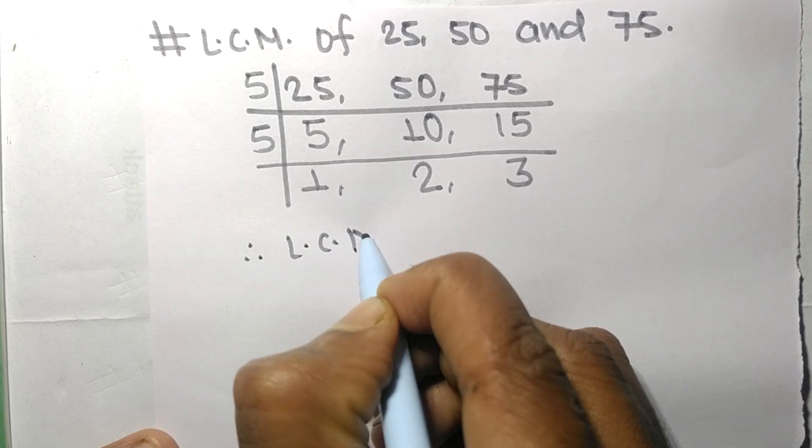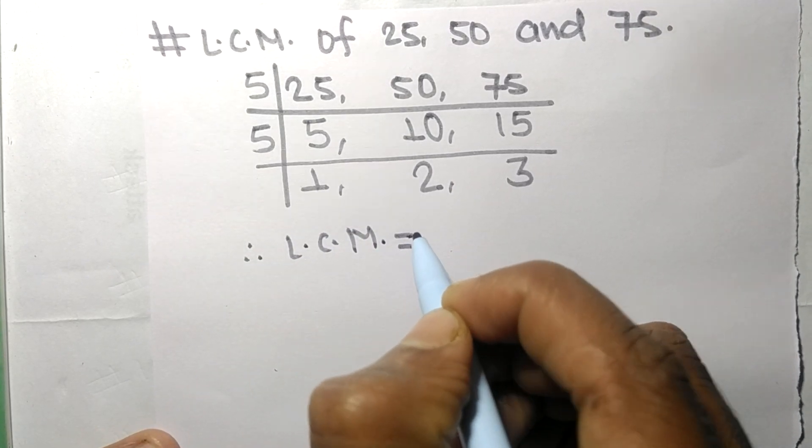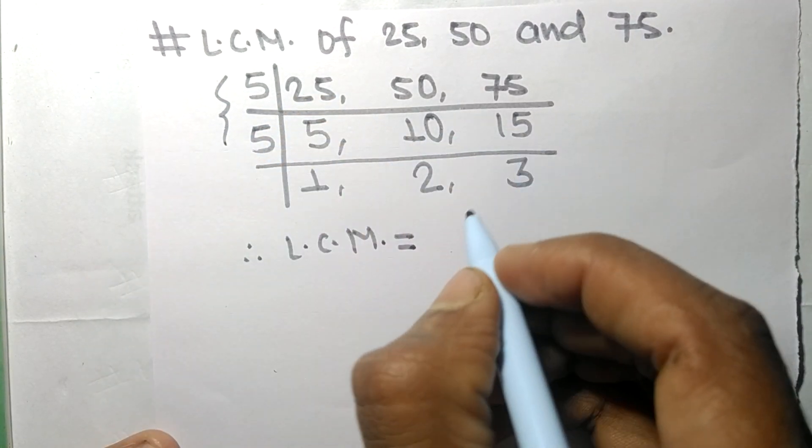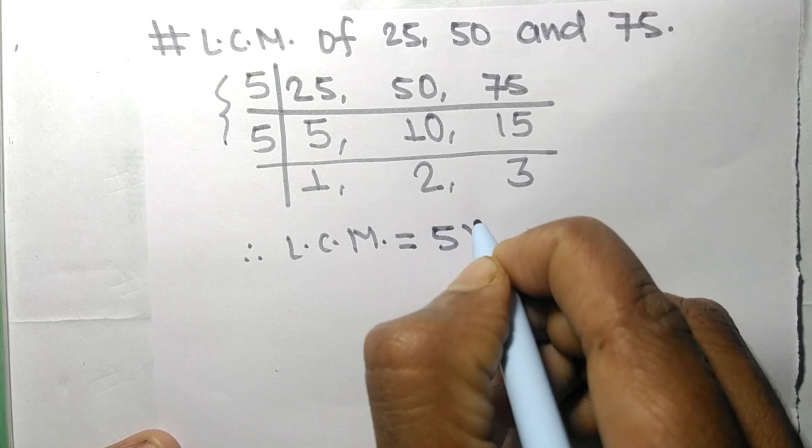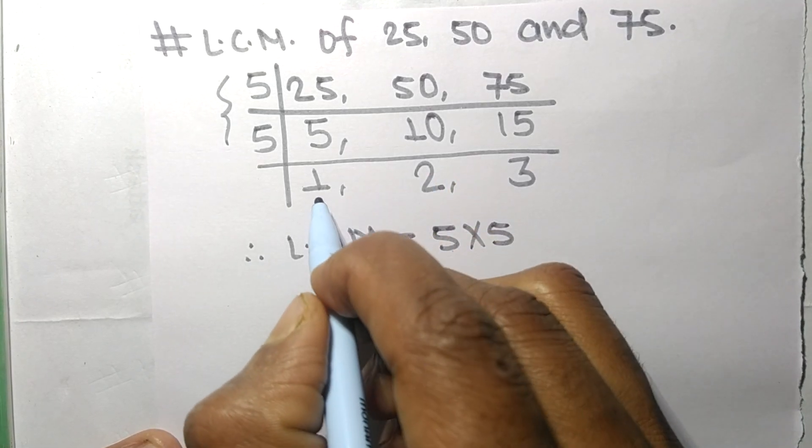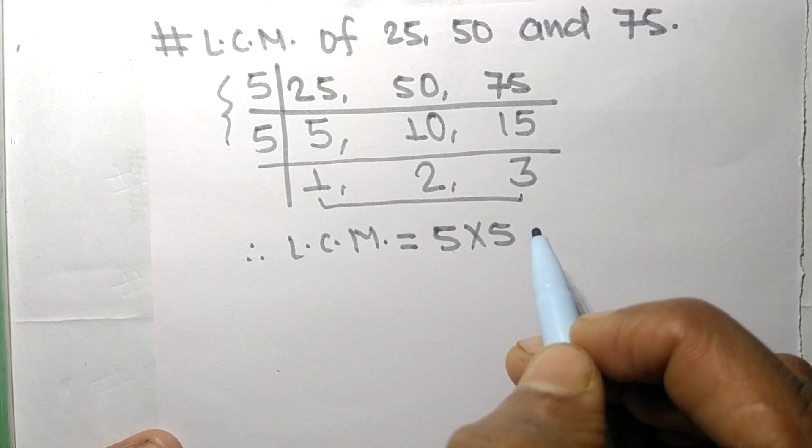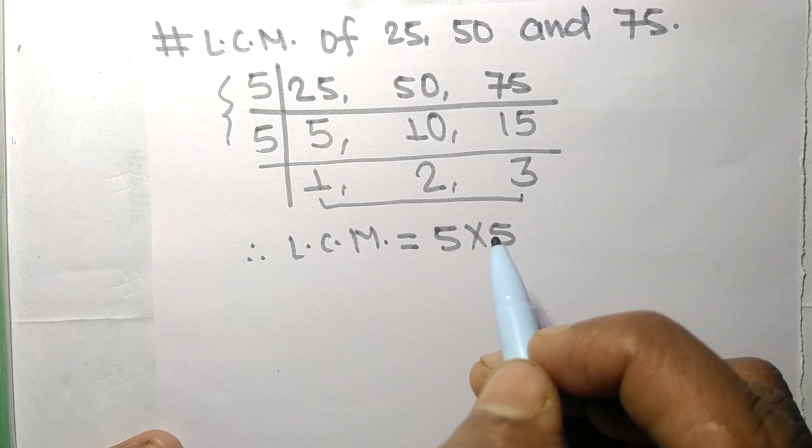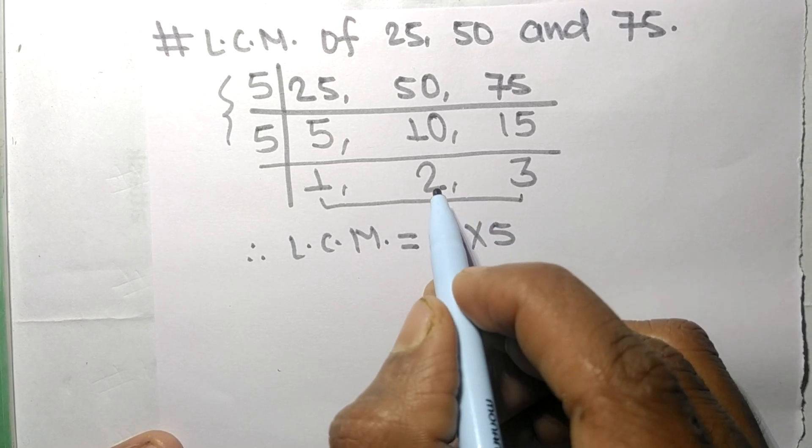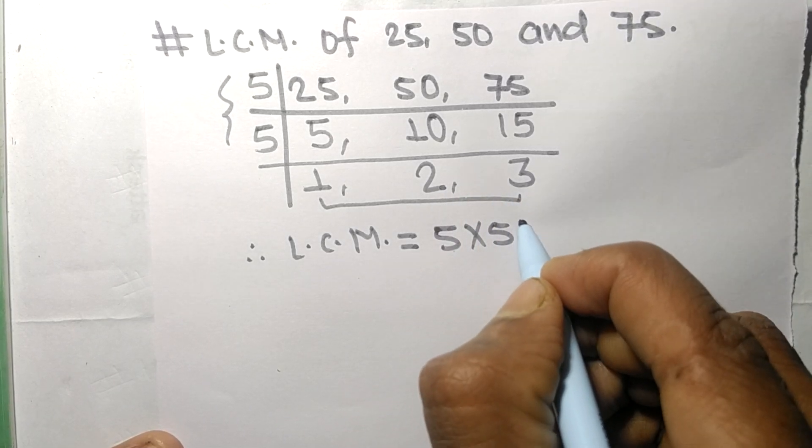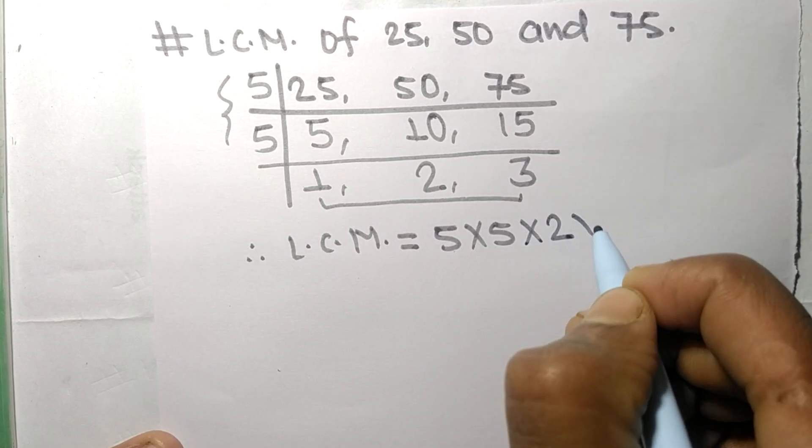the LCM is equal to, from this side it is 5 times 5, and from this side we choose the numbers greater than 1, that is 2 and 3. So we multiply by 2 and 3.